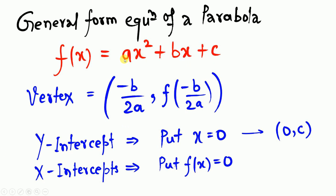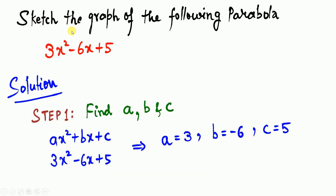The general form equation of a parabola is a quadratic equation. To sketch it, compare with the standard equation to get values of a, b, and c. The vertex point is (−b/2a, f(−b/2a)). For the y-intercept, put x = 0; for x-intercepts, put f(x) = 0.